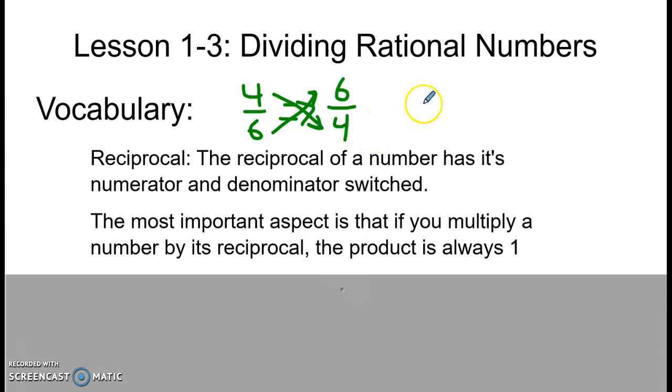With an integer, we can do the same thing. It turns into 1 over whatever your integer is. The reason it does that is that there's a hidden 1 underneath every integer. Every whole number has a 1 as its denominator.